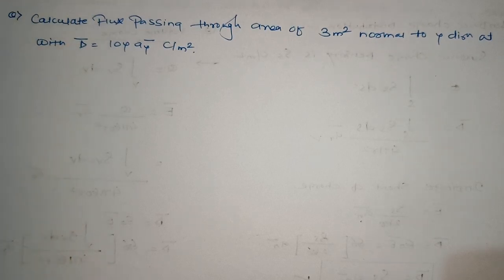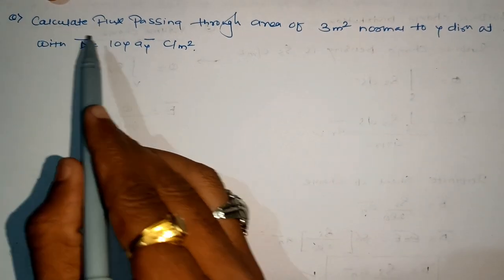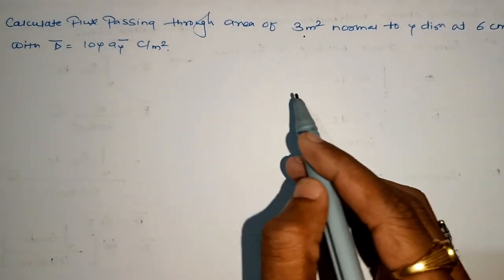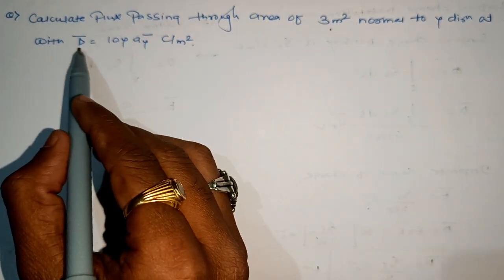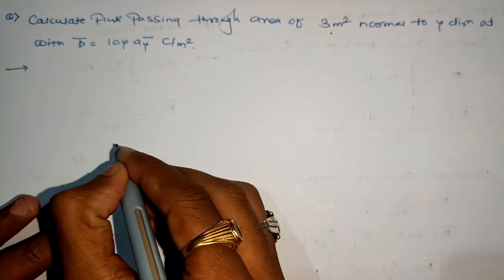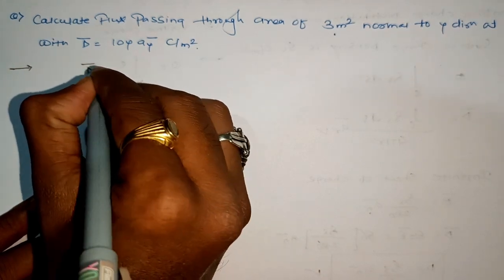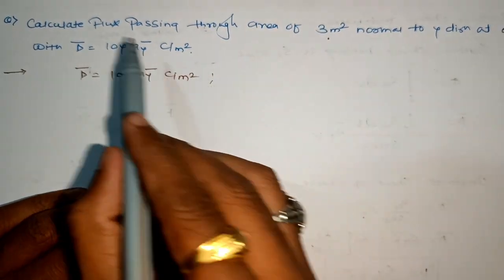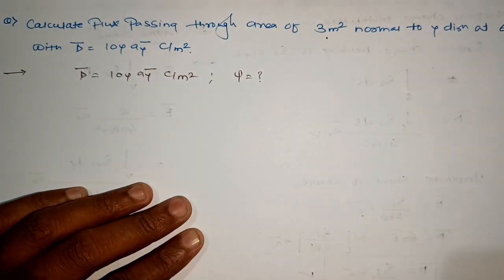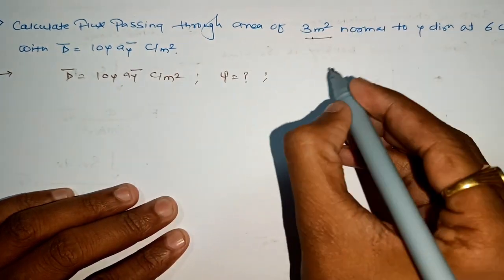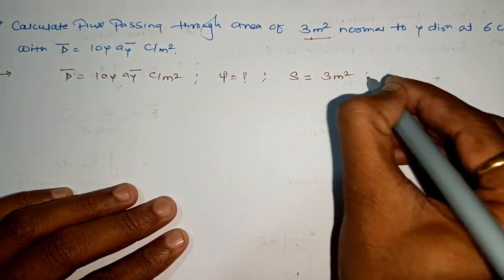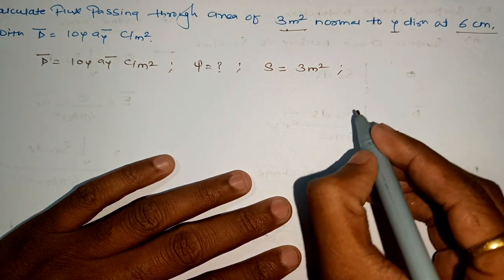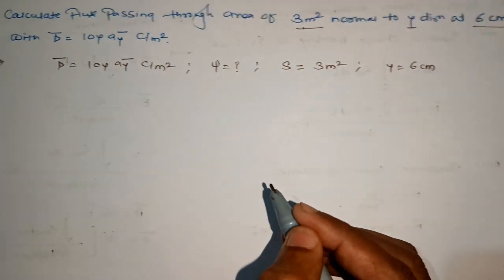Let's take examples on flux density. In the first question, we have to calculate the flux passing through an area of 3 square meters which is normal to the y-direction at y = 6 centimeters. The given electric flux density is D = 10y · ay, and we need to find the flux psi passing through the surface area of 3 square meters.